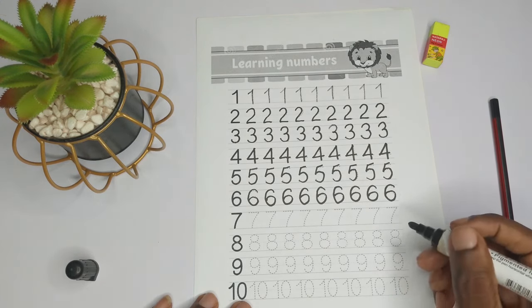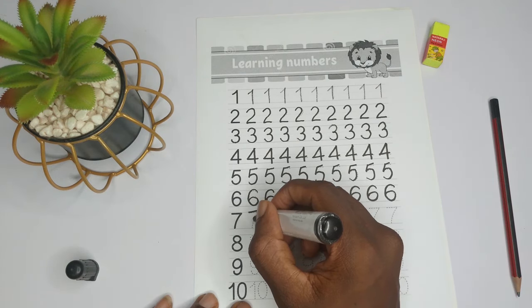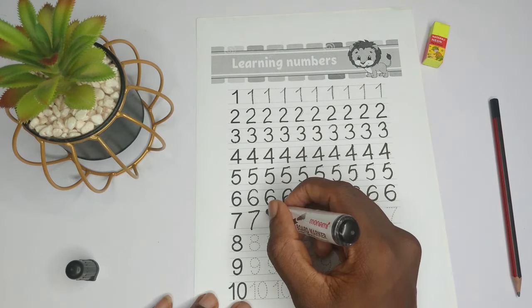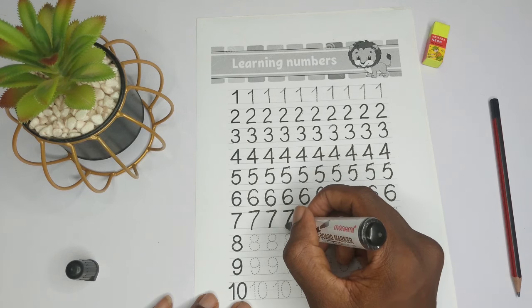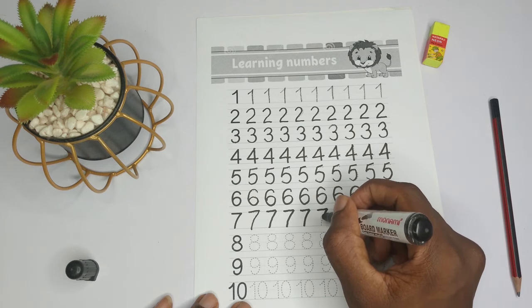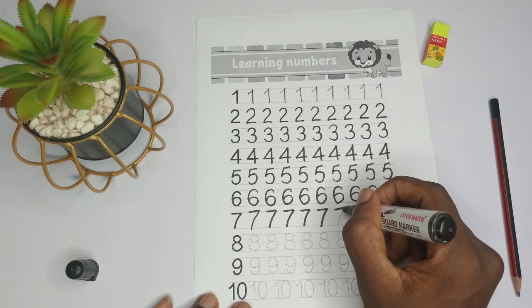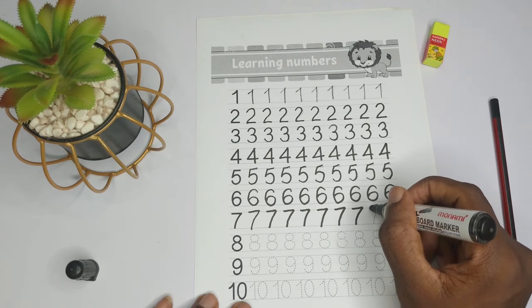Now let's look at the next one: seven. So draw a straight line, then curve down: seven. Seven. Follow the dotted guidelines: seven, seven, seven. Very good.